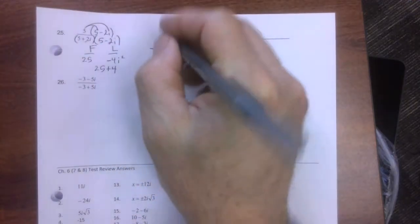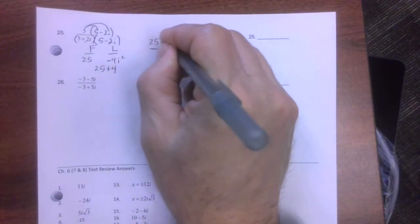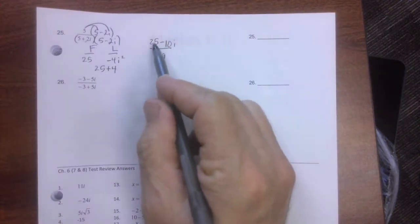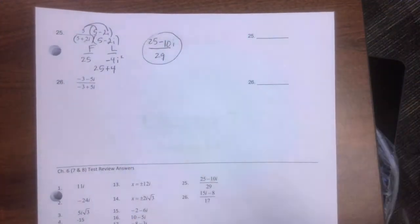Then I distribute, distribute, and I get 25 minus 10i. Notice there's no number that will go into all three of them. So we'll call that good.